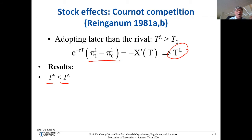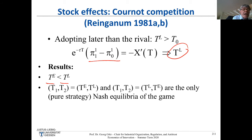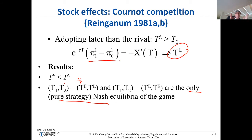What Jennifer Reinganum showed is that there exist two pure-strategy Nash equilibria in this game, and these are asymmetric: in one equilibrium, firm one chooses the early adoption date and firm two the late adoption date. Of course the roles can be swapped for the second equilibrium. Important result: ex-ante identical firms choose different adoption dates.